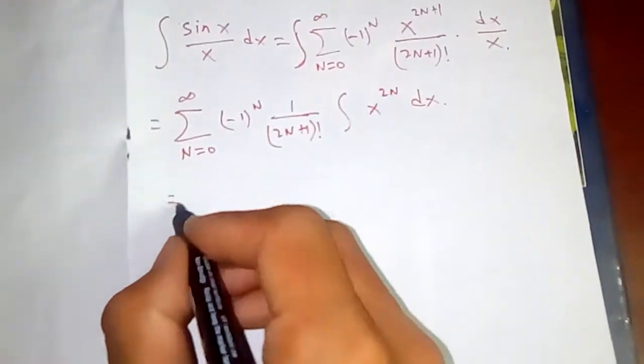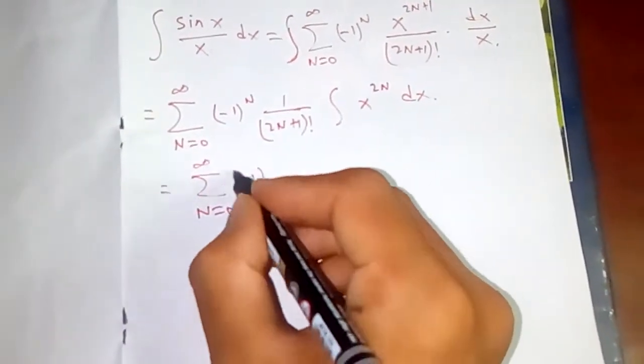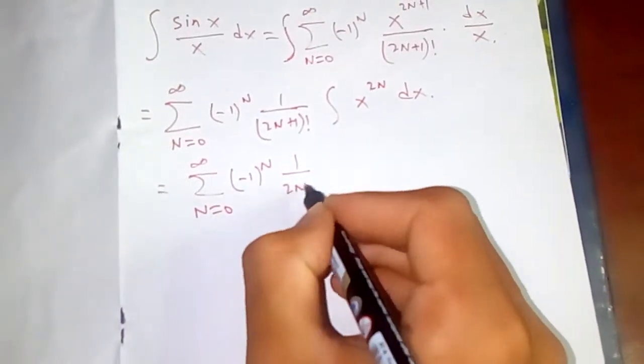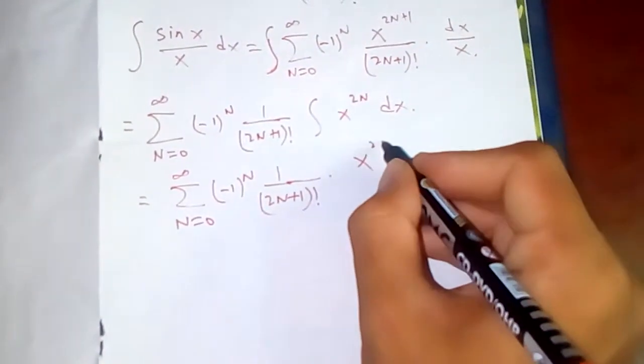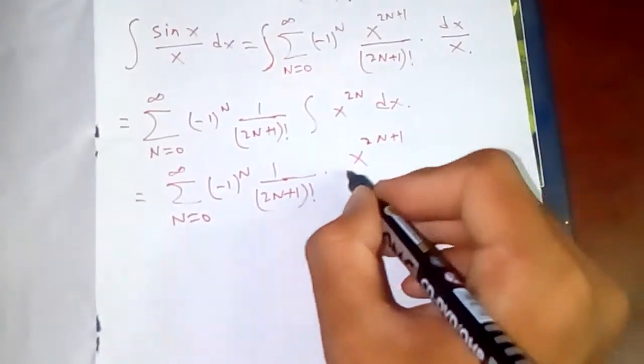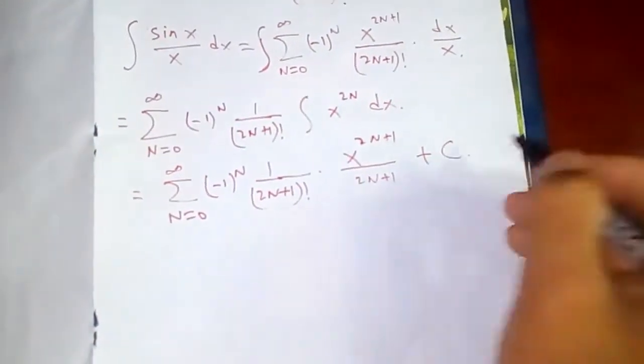Now this you can evaluate easily. Why? This is x to the (2n+1) over (2n+1) plus constant of integration.